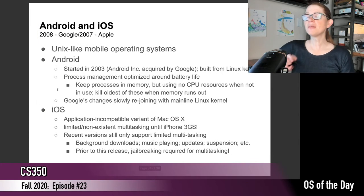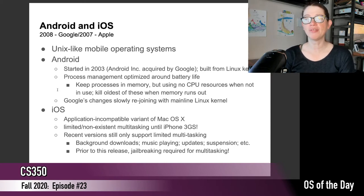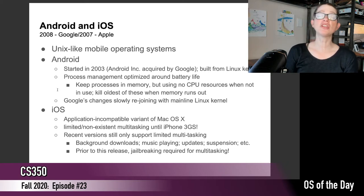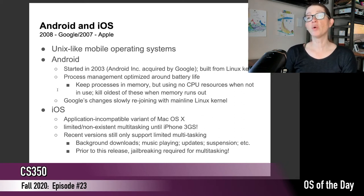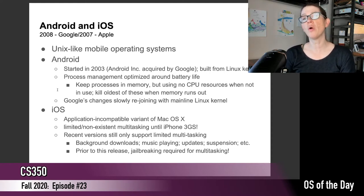Today I'm going to talk about Android and iOS together. These two operating systems were released roughly around the same time — Apple in 2007 and Android in 2008 — and they are both Unix-like operating systems. Android was started in 2003 as a company acquired by Google. It is a fork of the Linux kernel, taking advantage of open source software, with modifications for running on cell phones to avoid wasting battery power.